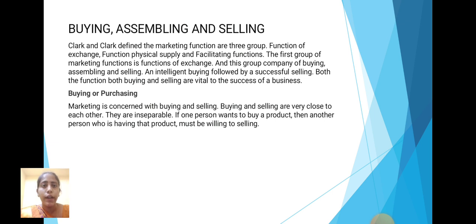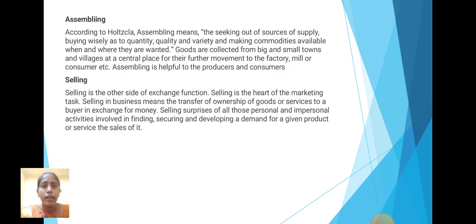Buying or purchasing. Marketing is concerned with the buying and selling. Buying and selling are very close to each other; they are inseparable. If one person wants to buy a product, then another person who has that product must be willing to sell. Next is assembling. According to Holzbla, assembling means the seeking out of sources of supply, buying visually as the quality, quantity and variety, and making commodities available when and where they are wanted. Goods are collected from big and small towns and villages at a central place for further movement to the factory, mill and consumer. Assembling is very helpful to the producer and consumer.